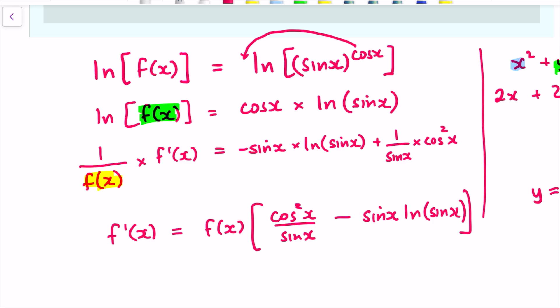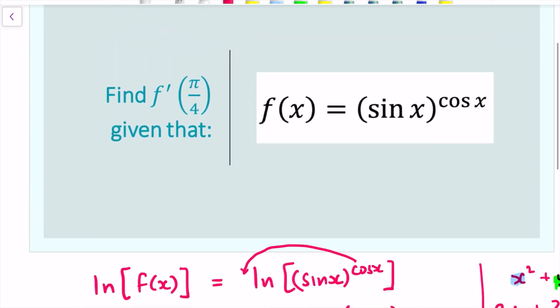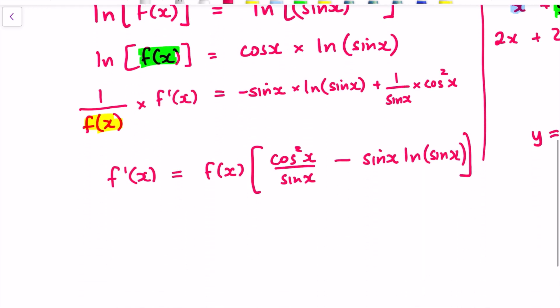Now we need to sub in the value x equals pi over 4 into the expression to find the slope at pi over 4. So f dash of pi over 4 is equal to f of pi over 4. So the function actually evaluated at pi over 4 multiplied by